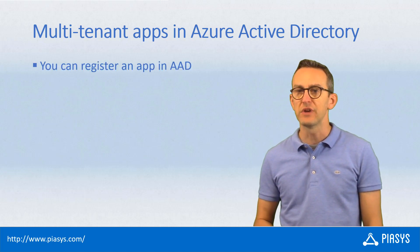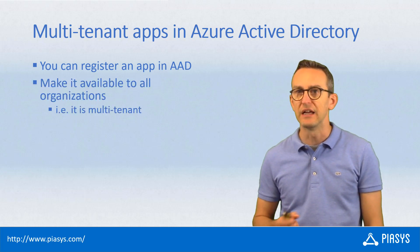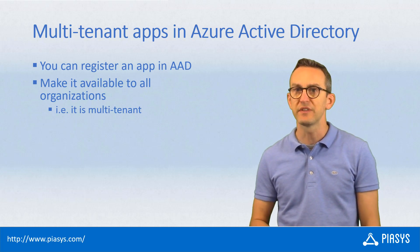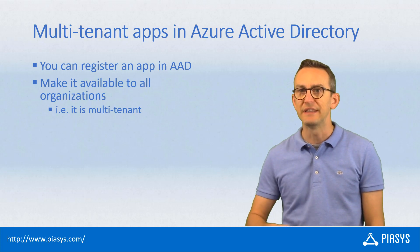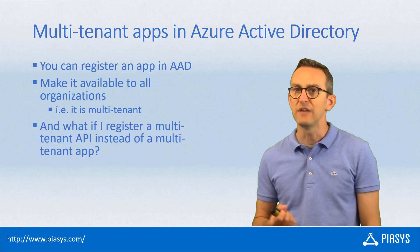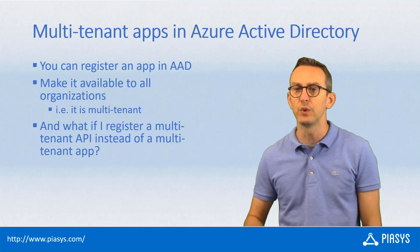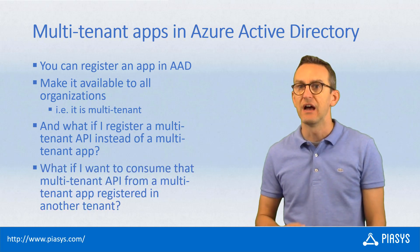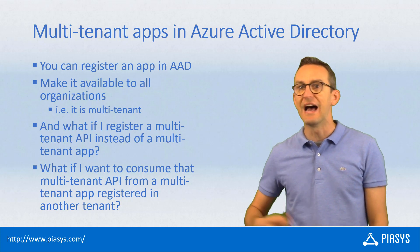Let's assume that we have an application registered in Azure Active Directory. We most likely know that we can register such an application as a multi-tenant application, which means that an application registered in one tenant can be leveraged by multiple users in multiple tenants. What if that application is an API app that you want to provide to third parties, and those third parties are other multi-tenant applications registered in other tenants?